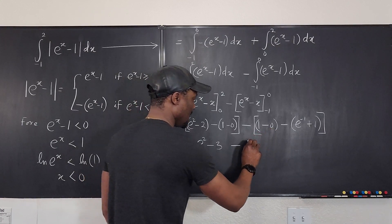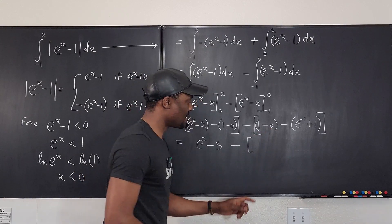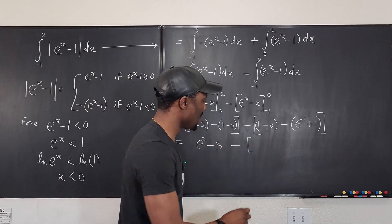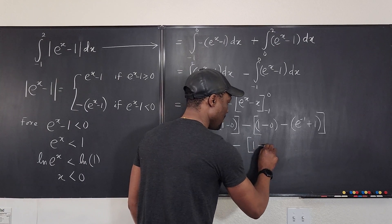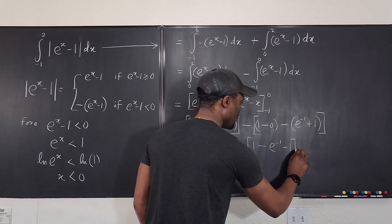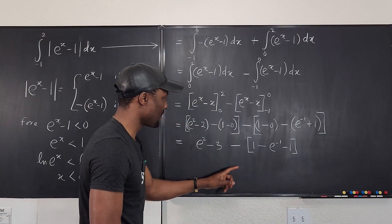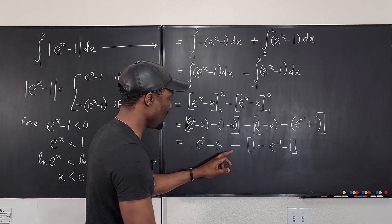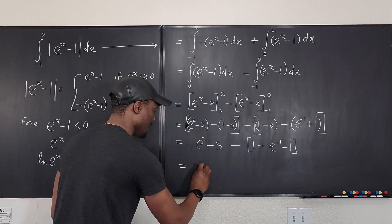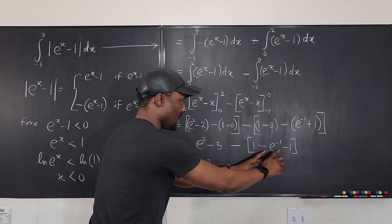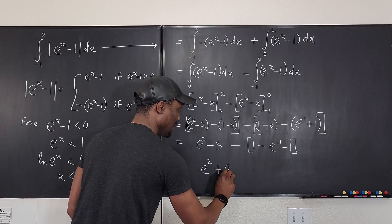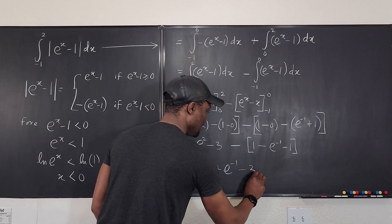Minus — what do we get here? Let's still put it here because of the minus sign. There's going to be one minus e to the negative one minus one. So that's going to be one minus e to the negative one minus one. Well, it looks like one minus one will cancel out. And what you have — this minus will change to a plus — so our final answer is e squared plus e to the negative one minus three.